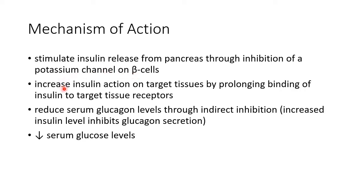They increase insulin action on target tissues by prolonging binding of insulin to target tissue receptors. They reduce serum glucagon levels through indirect inhibition — this is because increased insulin levels inhibit glucagon secretion. These three mechanisms together reduce serum glucose levels.